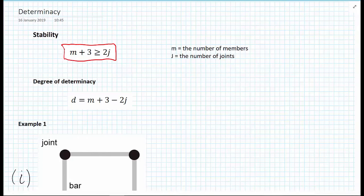This formula is derived from the fact that we have at most two equations of equilibrium at each joint j, a maximum number of three support reactions for a statically determinate structure in 2D — one for each equilibrium equation we can apply to the structure as a whole — and m is the unknown member forces.